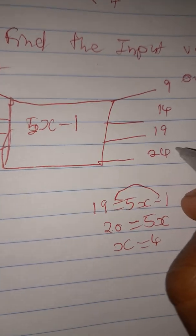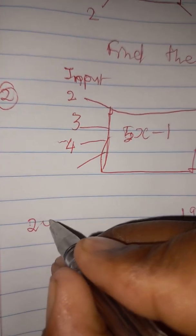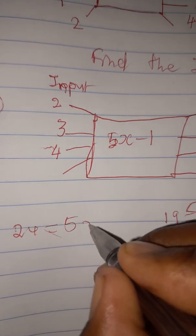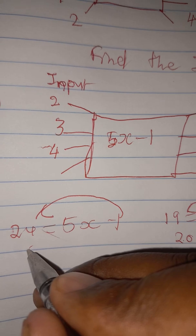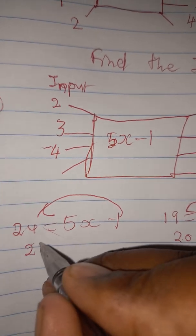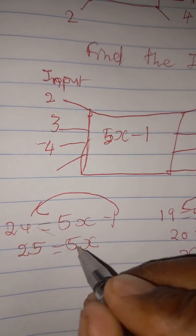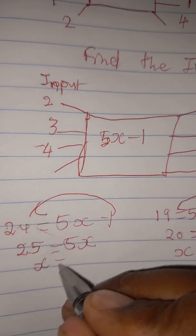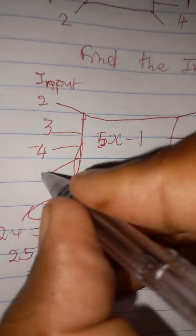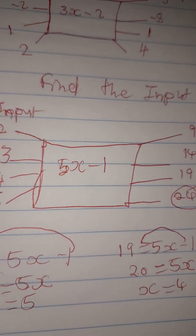For the last input value, 24 equals 5x minus one. Transposing negative one gives 24 plus one equals twenty-five, equal to 5x. Five goes into twenty-five five times, so x equals five. That is your last input value.